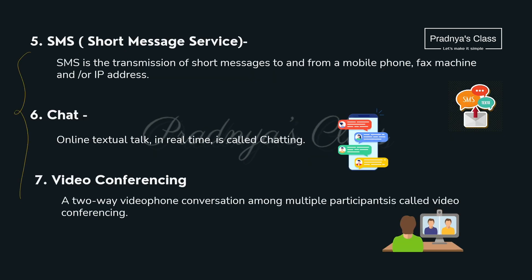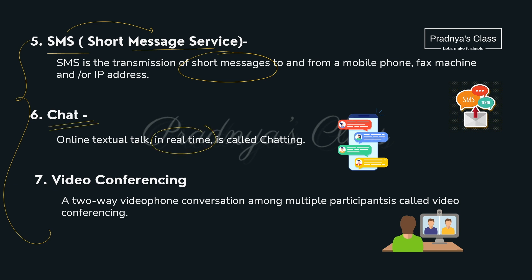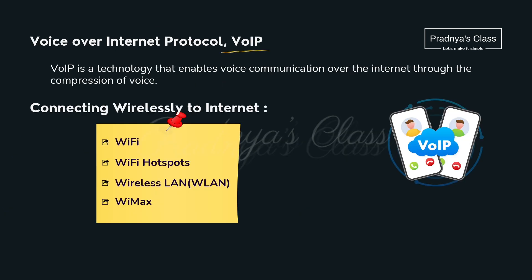Other communication options include SMS — Short Message Service — through which we can send or receive short messages. The second is chat, where we can send textual messages in real time. Followed by video conferencing, which is a two-way video phone conversation with multiple participants. One more important protocol is VoIP — Voice over Internet Protocol — with which we communicate through voice, just like a WhatsApp call.